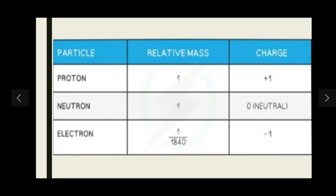To recap: protons have a positive charge, neutrons have a neutral charge of zero, and electrons have a negative charge. Protons have a relative mass of one, neutrons have a relative mass of one, and electrons have a negligible relative mass of 1/1840, which is essentially zero — so we don't take electron mass into account.